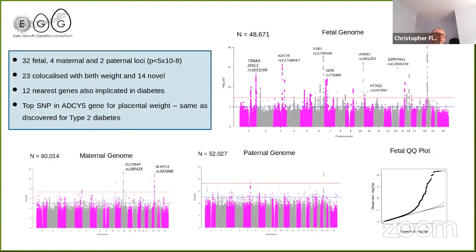We identified 32 fetal, 4 maternal, and 2 paternal loci reaching genome-wide significance. Of the 37 distinct loci, 23 co-localized with birth weight and 14 were novel. Of the nearest genes to the identified loci, 12 were also implicated in diabetes. Of particular interest is the ADCY5 gene on chromosome 3, which has a strong association with type 2 diabetes. The top SNP in the ADCY5 gene for placental weight was the same top variant for type 2 diabetes.